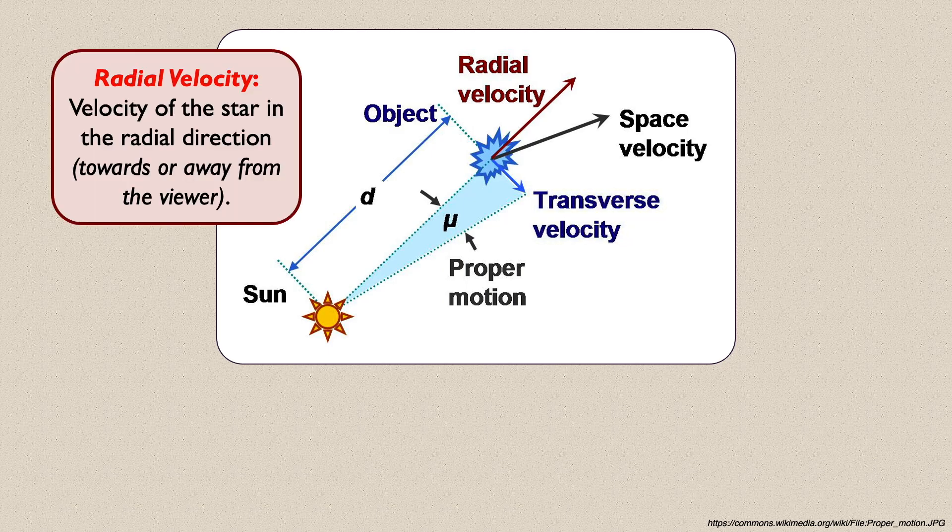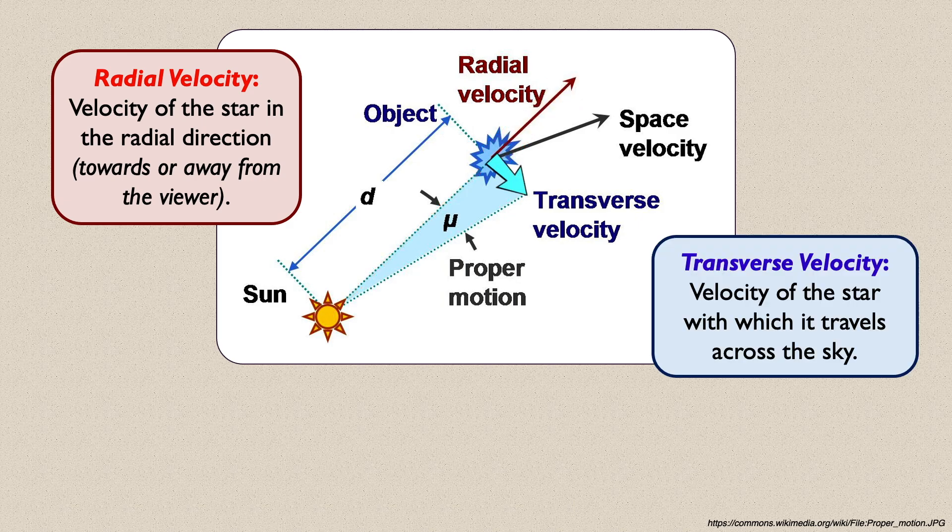To understand the star's true space velocity, we refer to its components: its radial velocity and its transverse velocity. A star's radial velocity is the velocity with which the star moves along the radial direction, meaning towards or away from the viewer along the viewer's line of sight.